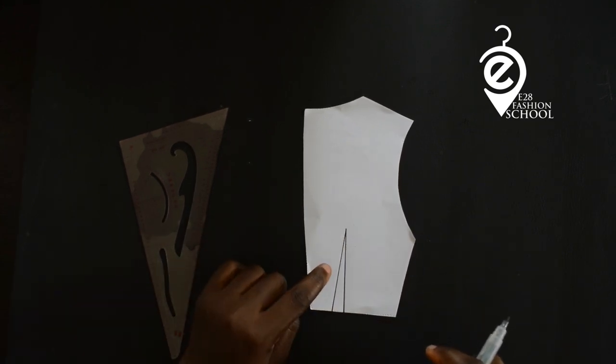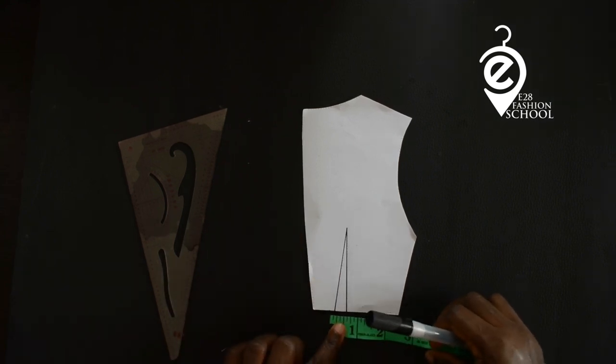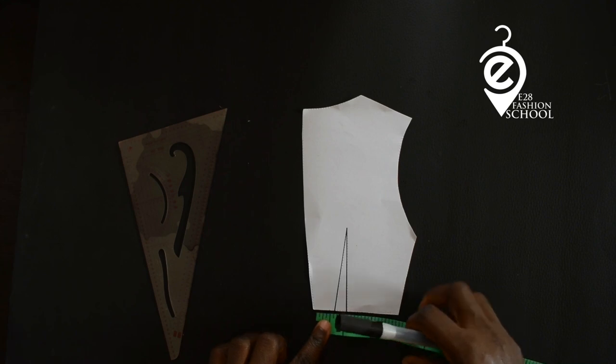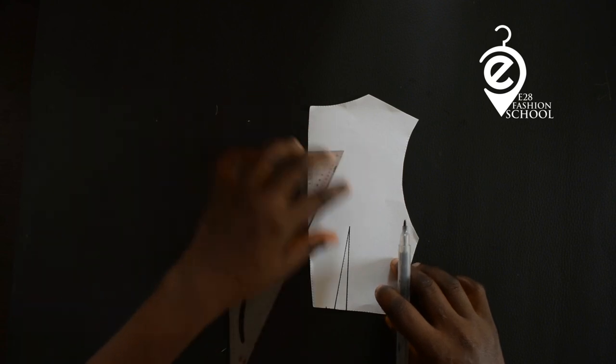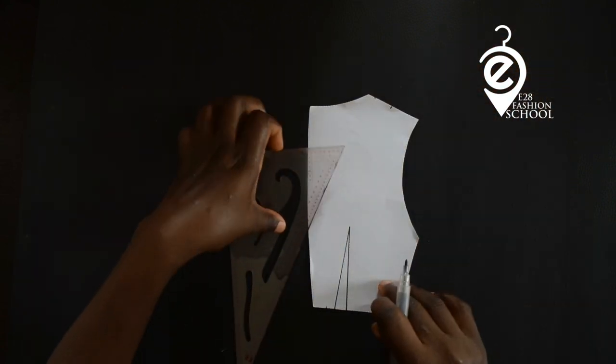Now if you don't have a waist dart, fantastic. But if you have a waist dart and need to eliminate it, what you do is take the space between the dart legs and mark it from the center back like so.